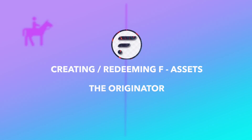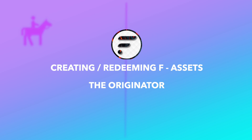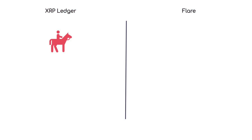The originator. First let us identify the originator on the XRP ledger. Coming all the way from Japan, it's CryptoEri — Eddie from Tokyo. She is interested in crypto finance offerings and will require FXRP to do so.